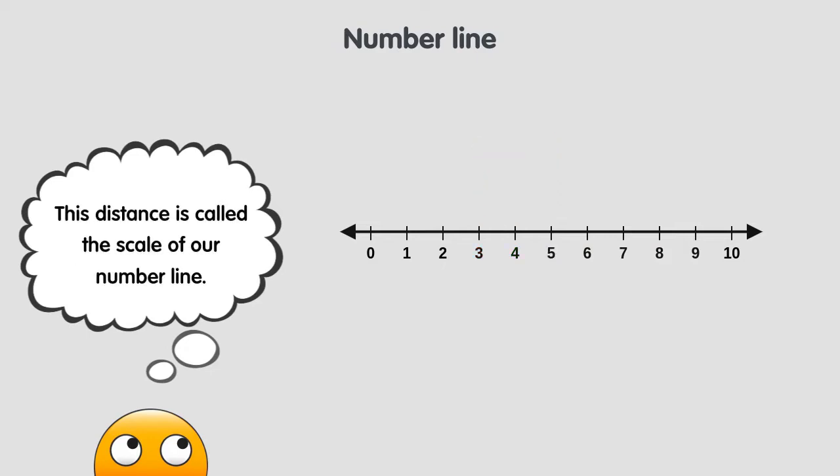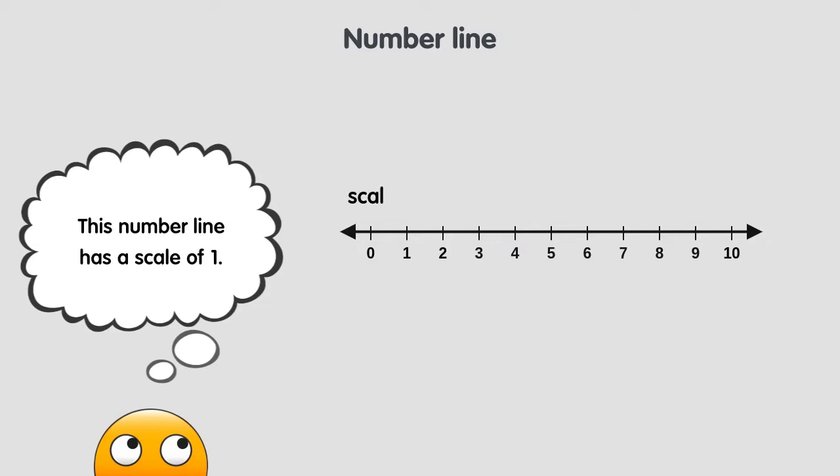This distance is called the scale of our number line. So we can say that this number line has a scale of 1. But the scale doesn't have to always be 1. It can be any number, like 2, or 3, or any number you want, depending on your needs.